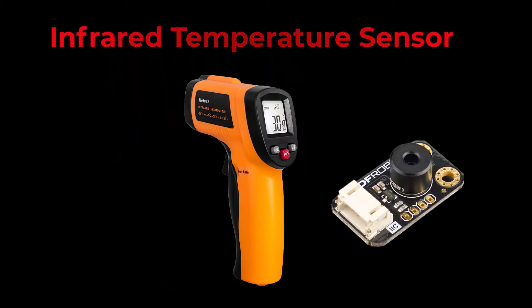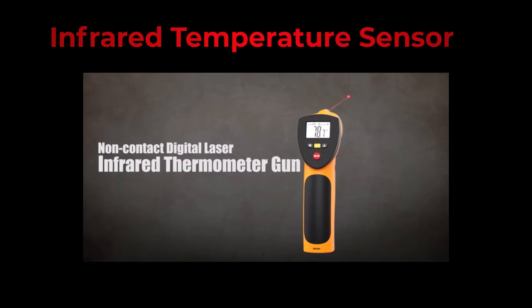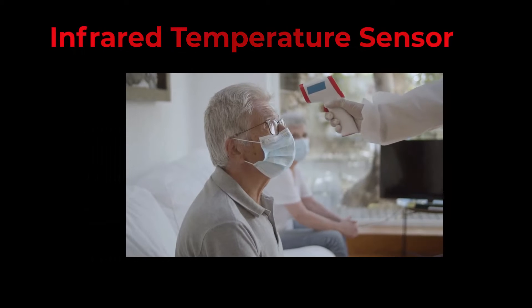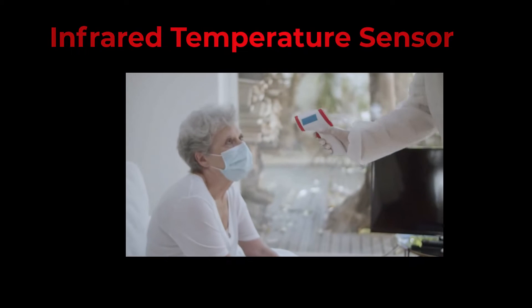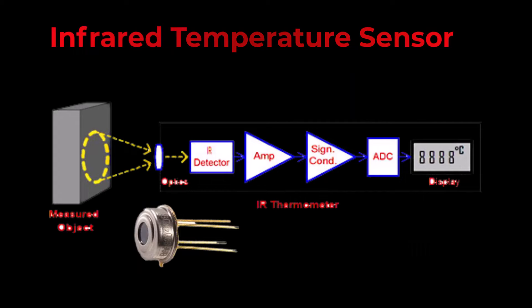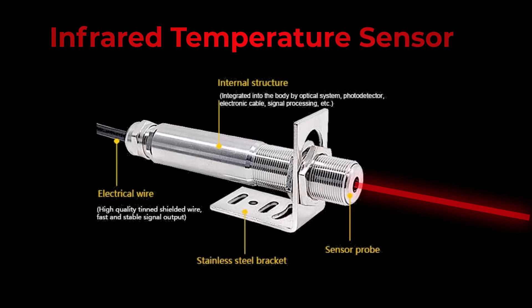Stepping into the realm of non-contact sensing, we have infrared sensors. These detect temperature through emitted infrared radiation and are a staple in industries and medical imaging. An infrared temperature sensor, also known as an infrared thermometer or pyrometer, is a device that measures the temperature of an object without making physical contact. It does so by detecting the infrared radiation emitted by the object, which is directly proportional to its temperature. This technology is based on the principles of blackbody radiation and the Stefan-Boltzmann law.